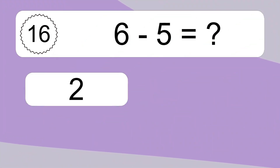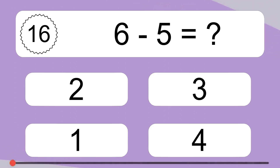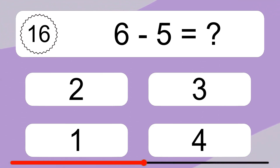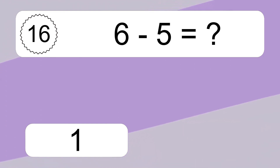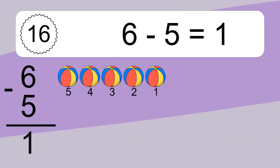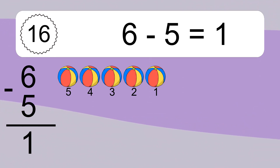6 minus 5 equals what? 6 minus 5 equals 1. Let's count it: 5, 4, 3, 2, 1.